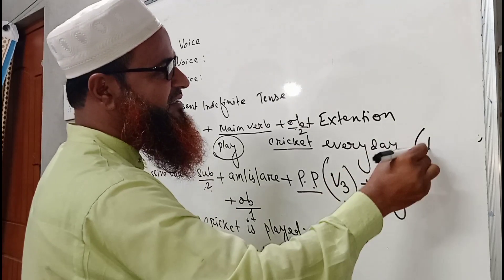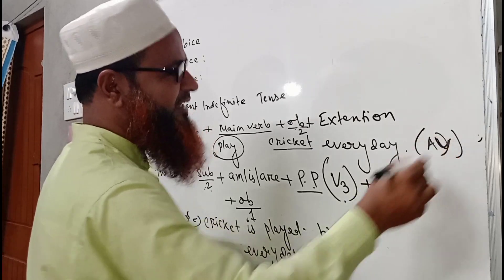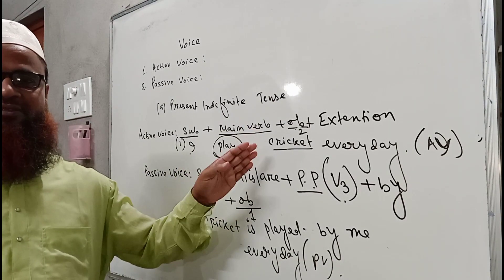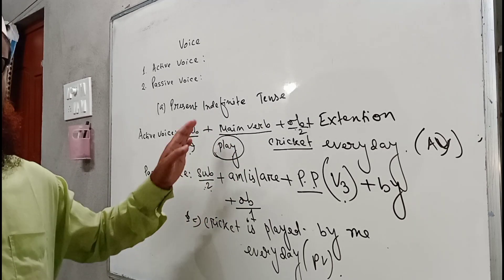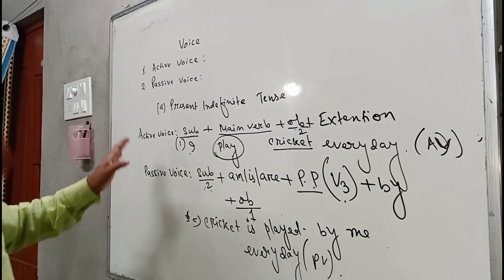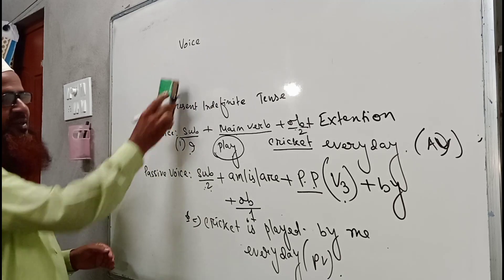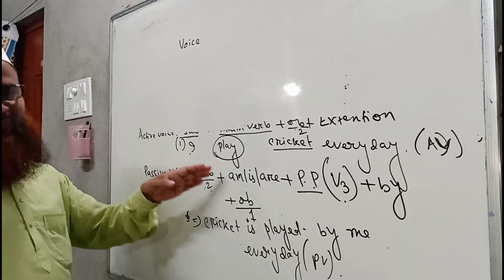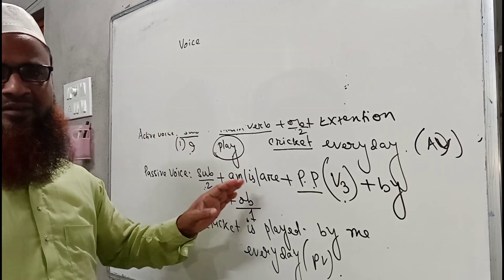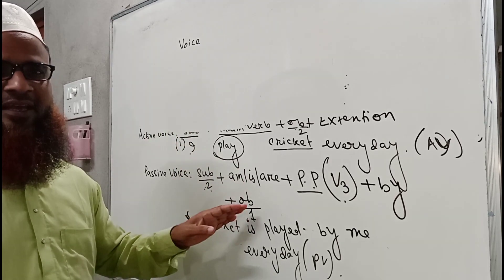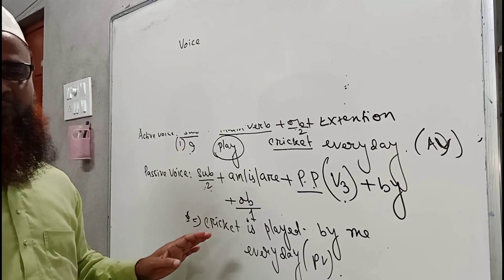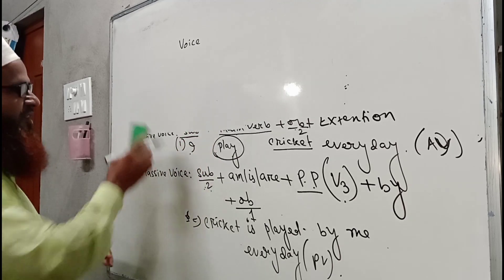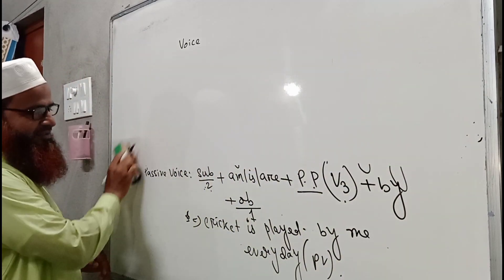So the active voice sentence is 'I play cricket every day,' and the passive voice sentence is 'Cricket is played by me every day.' I hope you have already understood this very easy method to change from active to passive. One example is enough to understand because everything has become crystal clear — how a sentence of active voice is changed into a sentence of passive voice using these two structures.